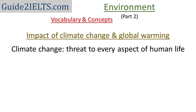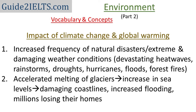World temperatures are rising because of human activity — climate change is happening — and this now threatens every aspect of human life. Climate change has been linked to an increased frequency of natural disasters. There have been extreme and damaging weather conditions such as heat waves, rainstorms, floods, and more forest fires. Because of the increase in global temperature, glaciers are melting at an accelerated rate, leading to increased sea levels, which is damaging coastlines and causing increased flooding.